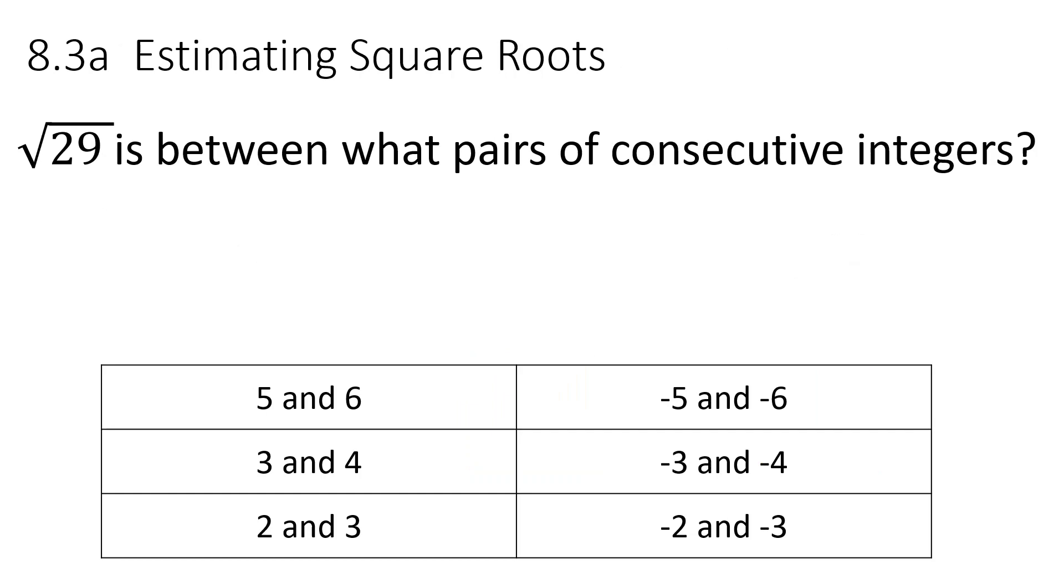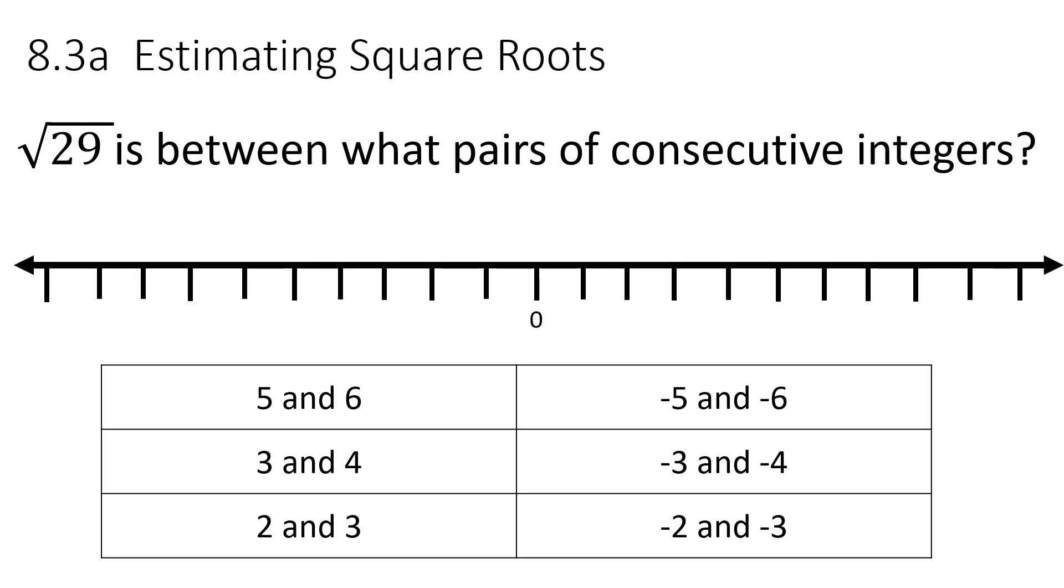So square root of 29 is between what pairs of consecutive integers? Well, if you look at a number line, you realize that the closest perfect square to square root of 29 is going to be square root of 25, which is 5. And then right above it would be square root of 36, which is 6. So it's going to be between 5 and 6. Now that's the best answer. But you need to realize that it could also fall with negative numbers because negative 5 times negative 5 gives you 25. Most likely you're going to be fine if you just pick the positives. Moving on.